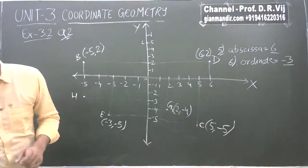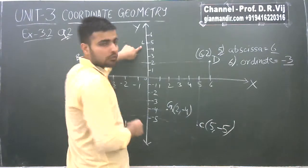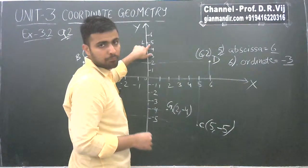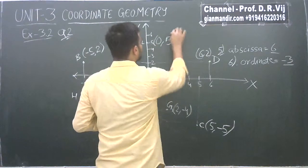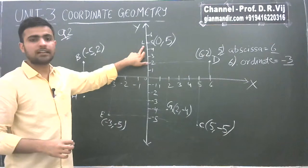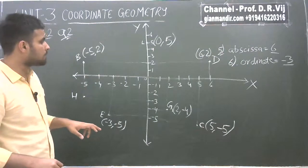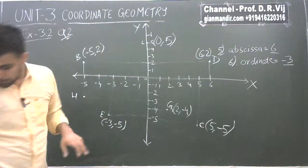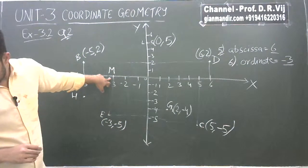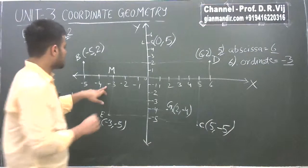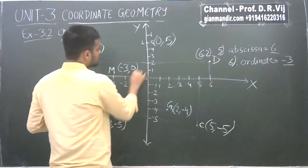Seventh part: coordinates of L. L lies on the Y axis. The abscissa of L is 0 and the ordinate is 5, so the coordinates of L are (0, 5). Eighth part: coordinates of point M. M is at abscissa minus 3 and ordinate 0, so the coordinates of M are (-3, 0).